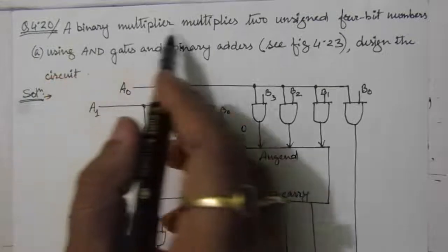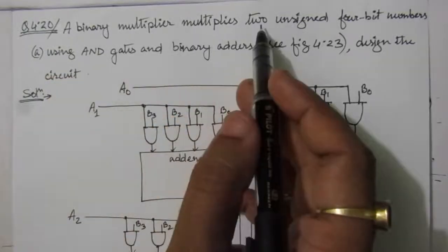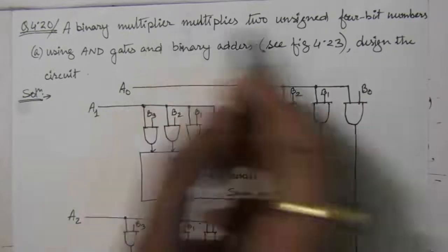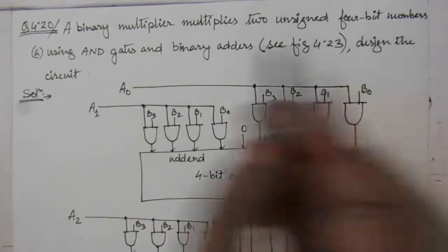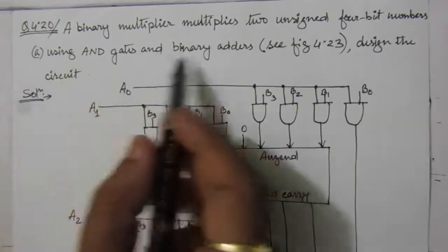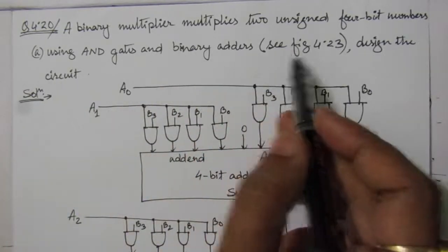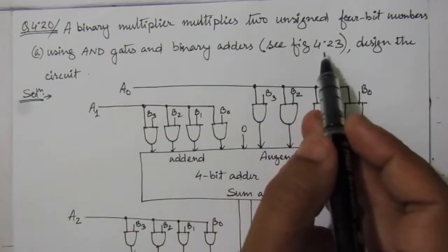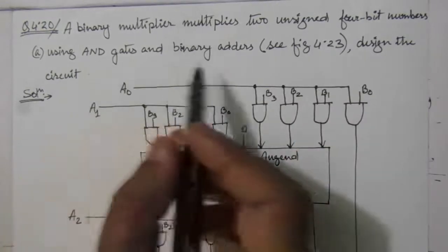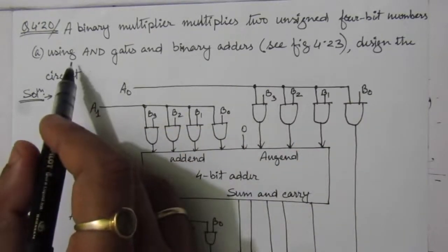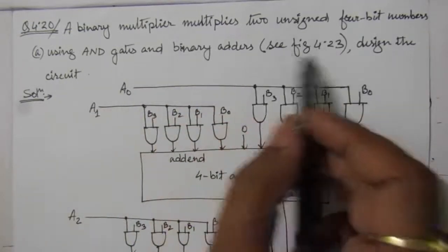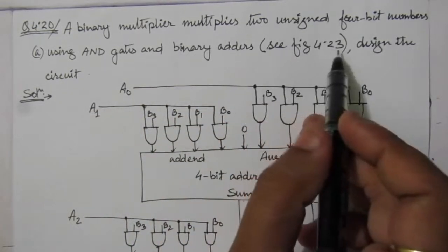The problem states: a binary multiplier multiplies two unsigned 4-bit numbers. We have to design a circuit using AND gates and binary adders — see figure number 4.23. This is from the fourth edition of the book. So the question is to design a circuit that will use AND gates and binary adders as per the given figures inside the chapter.